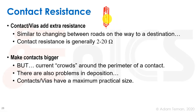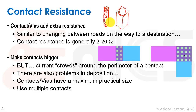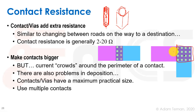In a dual damascene process, contacts are made out of copper; in the past, they used tungsten. Because current crowds around contacts, making them bigger doesn't give proportionally lower resistance. What we usually do is use a practical fixed contact size and place multiple contacts in parallel to reduce resistance. For example, when making a power rail between VDD and ground layers, we put an array of contacts to minimize resistance between the two layers.